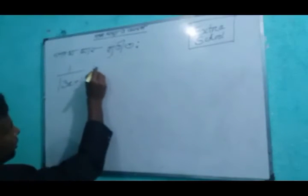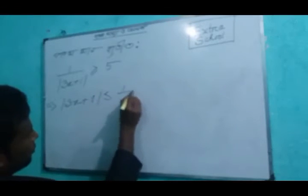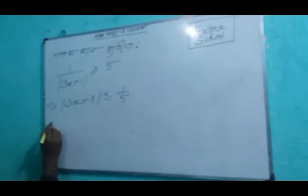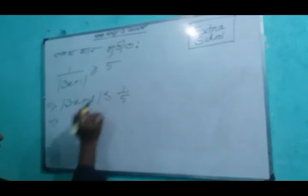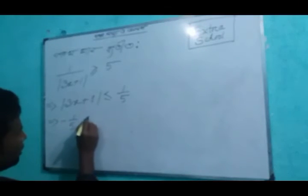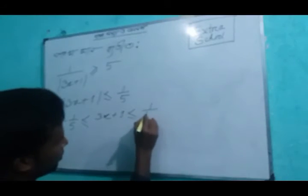One by the modulus of 3x plus 1, multiple, lateral equal to 5. So we have: minus 1 by 5, less than or equal to 3x plus 1, less than or equal to 1 by 5.